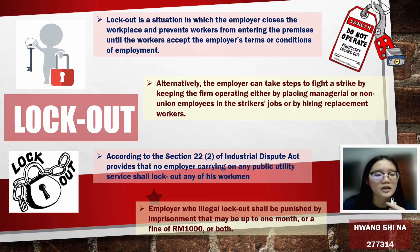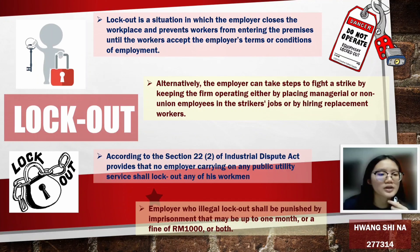employers can take steps to fight a strike by keeping the firm operating, either by placing managerial or non-union employees in the striking workers' jobs, or by hiring replacement workers. According to Section 22 of the Industrial Relations Act, no employer carrying on any public utility service shall lockout any of his workmen: without giving notice of lockout within six weeks before locking out, or within 14 days of giving such notice, or before the expiry of the date of lockout specified in any such notice.